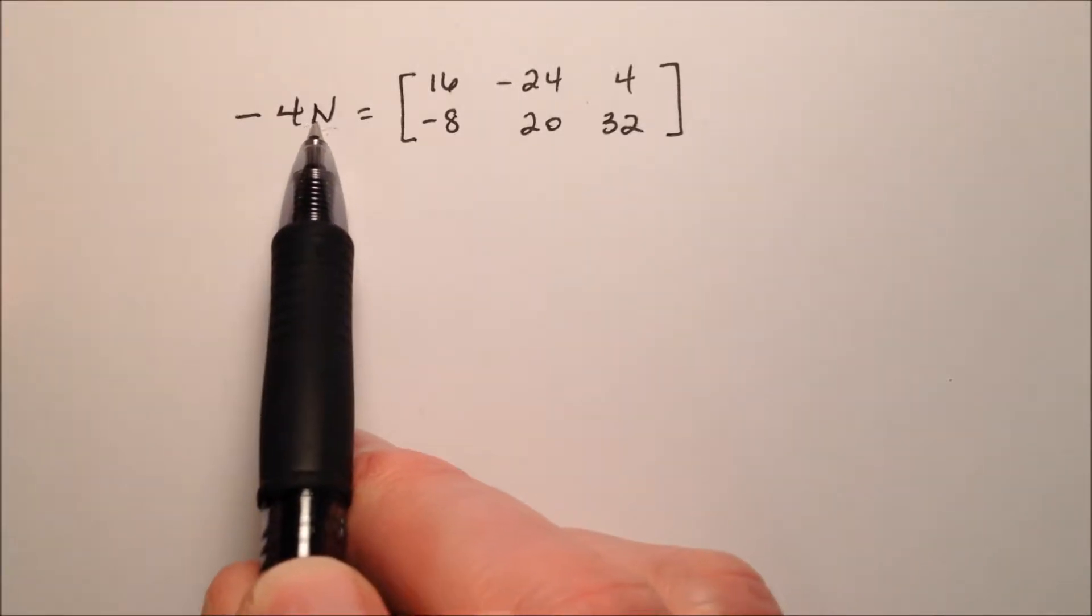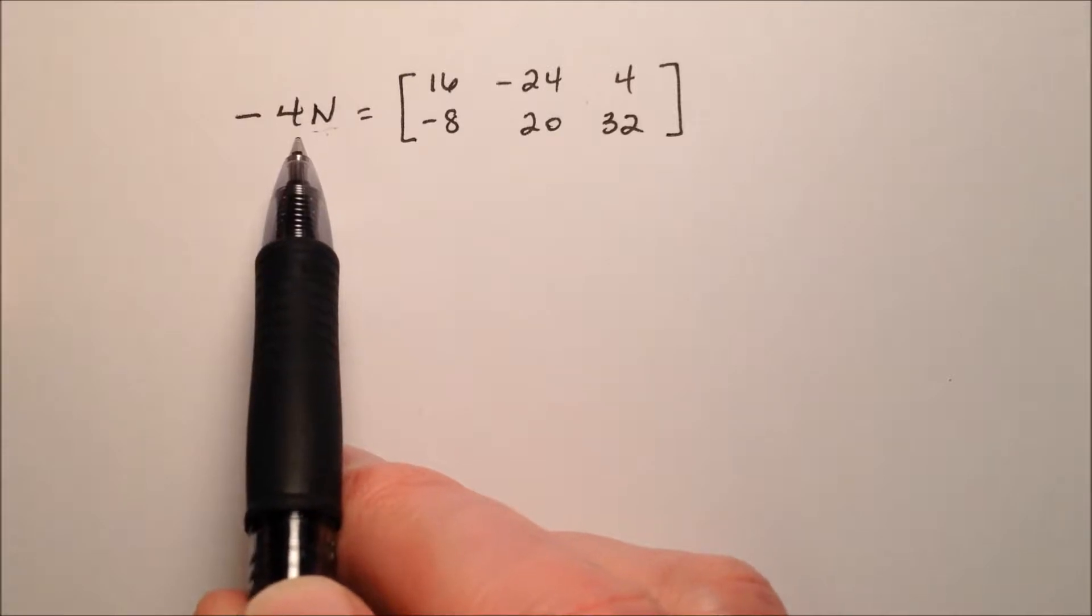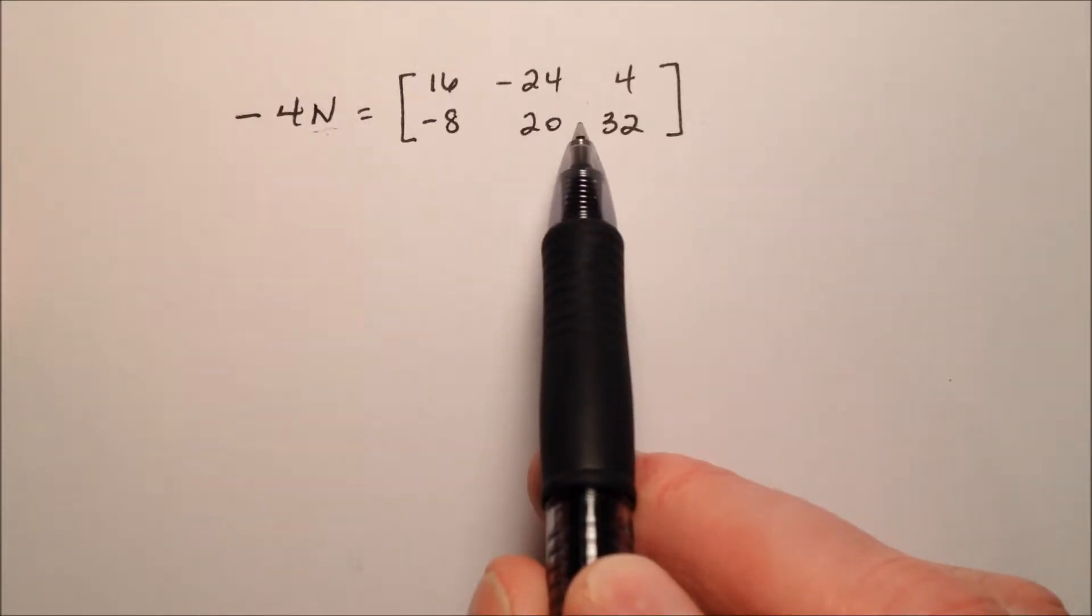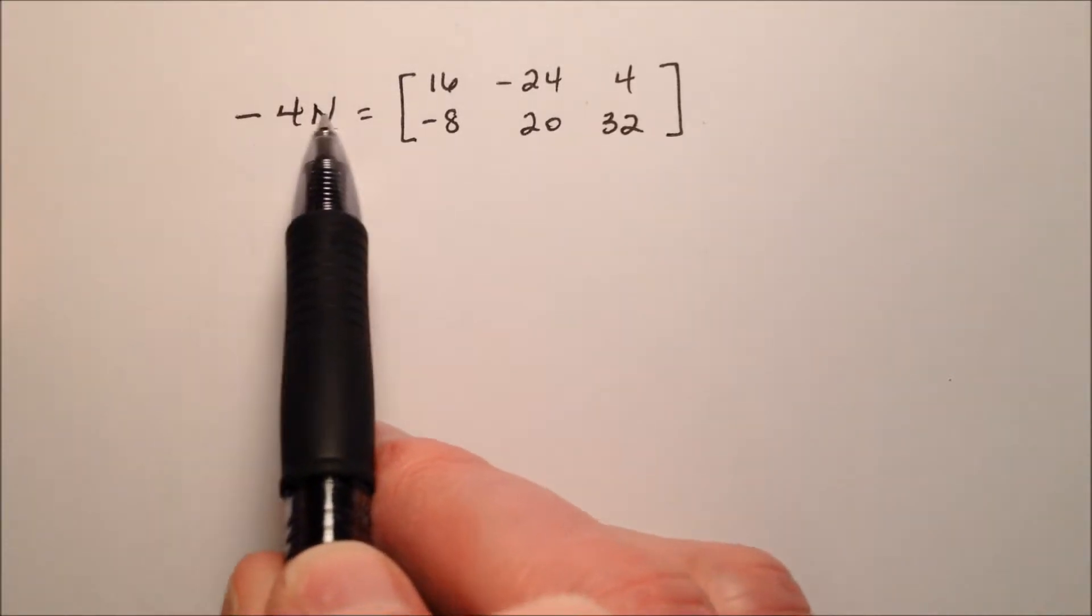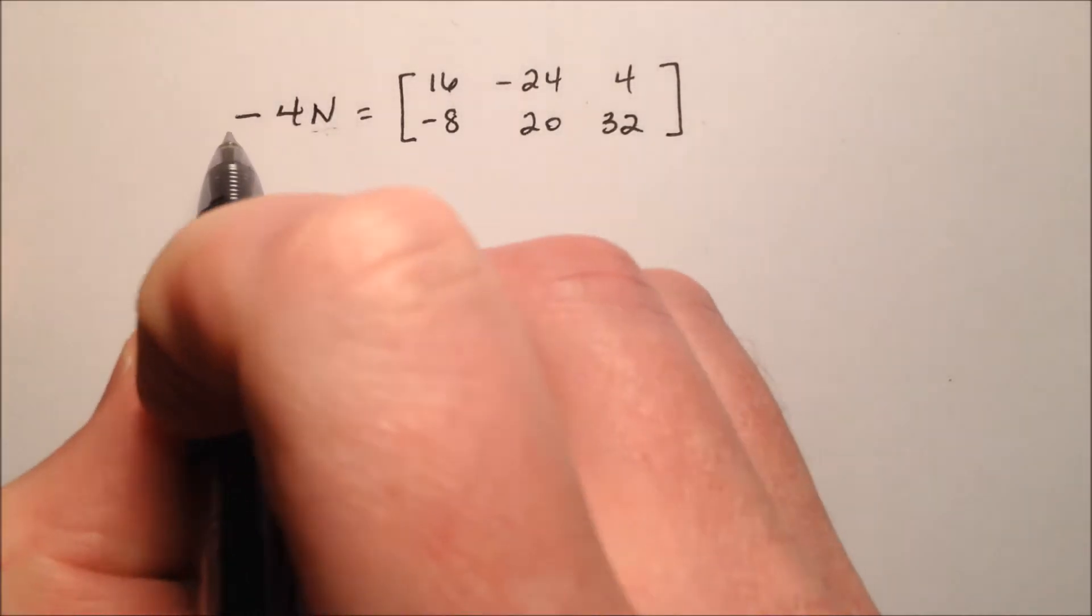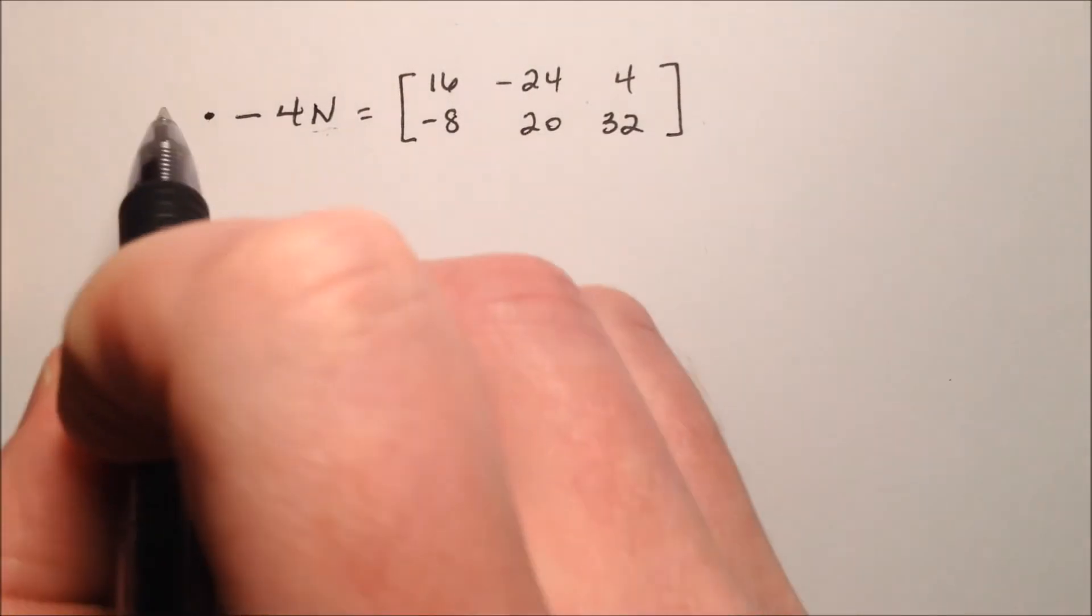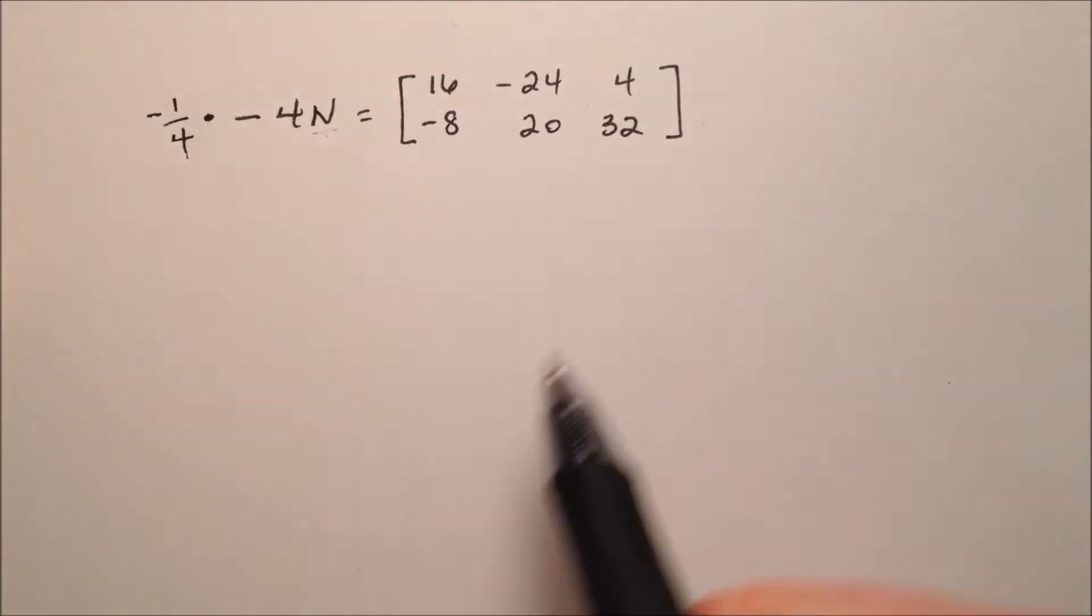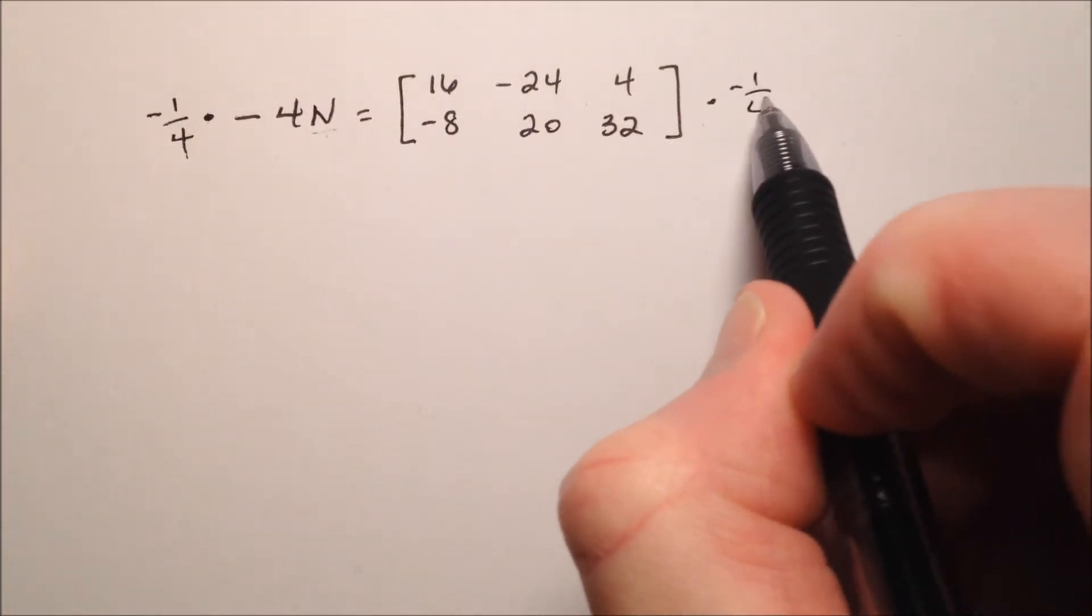So since I know that N has been multiplied by negative 4, I need to go through and divide both sides by negative 4 to get rid of this multiplication, or probably a little easier with matrices, I'm going to multiply both sides by negative 1 fourth.